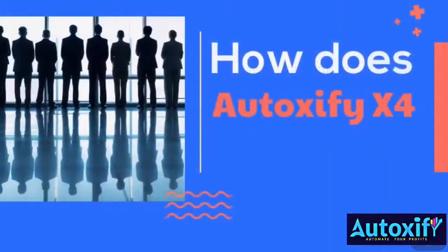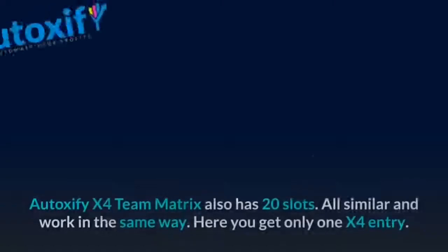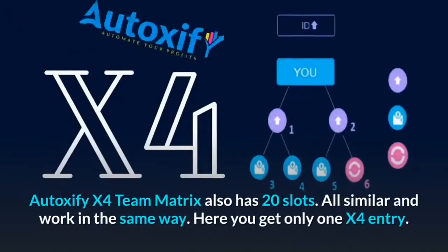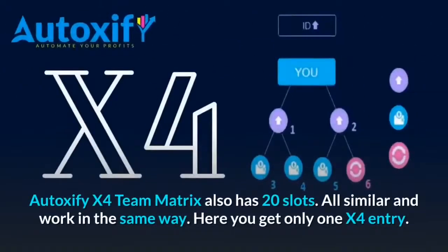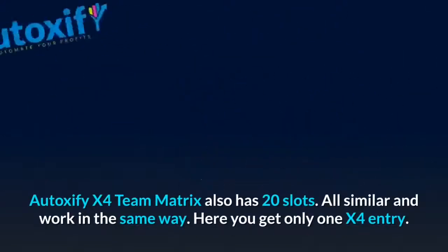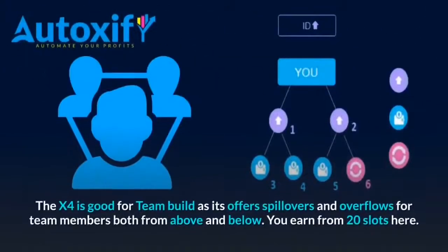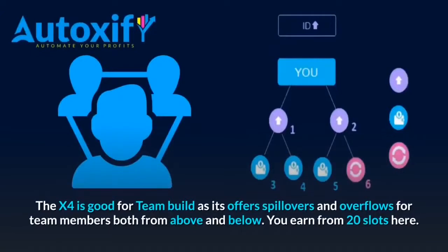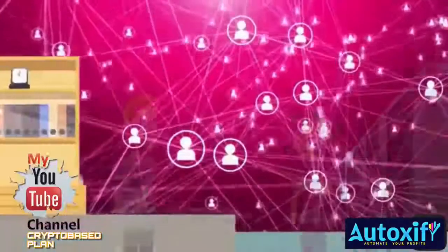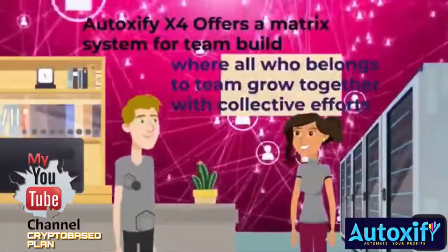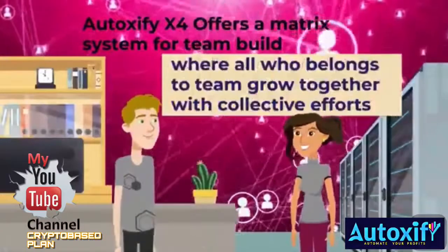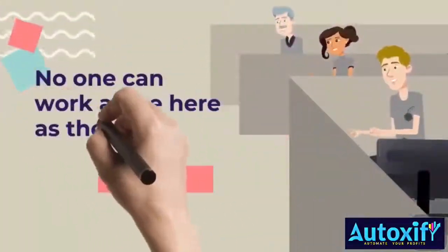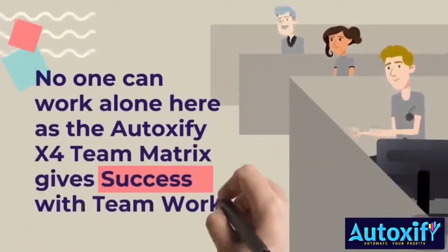How does Autoxify X4 work? Autoxify X4 is a team matrix with spills and overflows, also featuring 20 slots, all working in the same way. Here you get only one X4 entry. The X4 is good for team building as it offers spillovers and overflows for team members from both above and below. You earn from all 20 slots. Autoxify X4 offers a matrix system where all who belong to teams grow together through collective efforts — no one can succeed alone here.